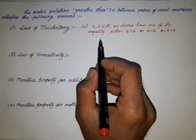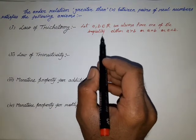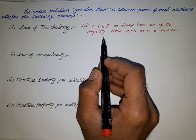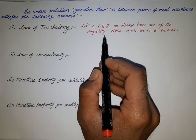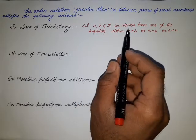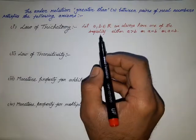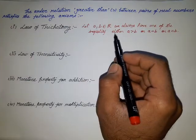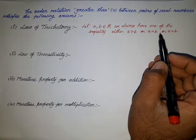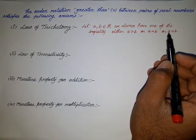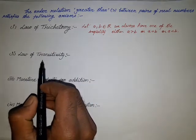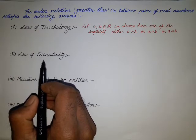So this is our first law — the Law of Trichotomy. For any two distinct real numbers a and b, we always have one of the inequalities: either a is greater than b, or a is equal to b, or a is less than b. The second law is the Law of Transitivity.